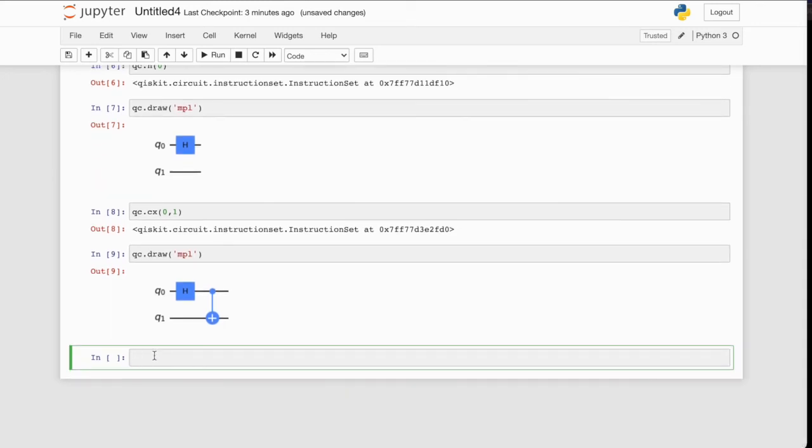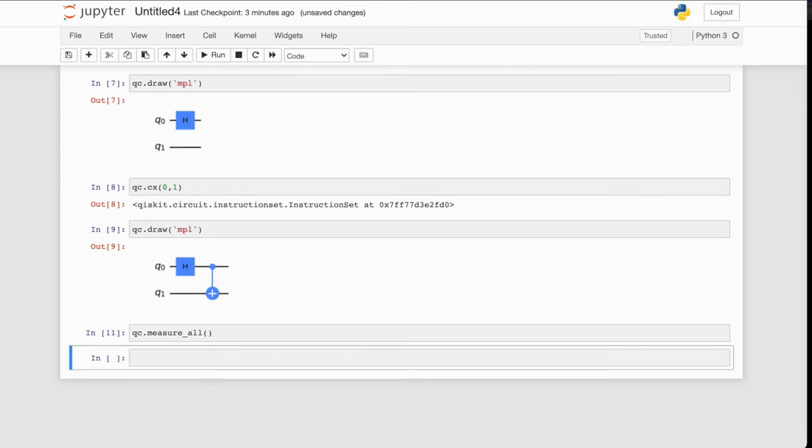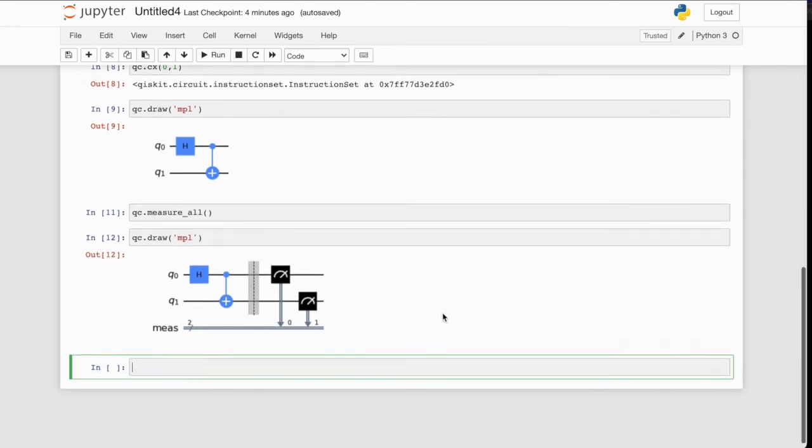Now all we need to do is measure the outputs of our qubits. And we can do that by calling measure_all. And that'll apply a measure gate to each of the qubits in the circuit. Oops, don't need that capital there. Let's run that again. It's one of the good things about the Jupyter notebooks. So let's draw our circuit again to see what it looks like. And you can see Qiskit's put a nice barrier there for readability. And it's added a measure gate on qubit 0 and qubit 1. And it's putting the results in two classical registers 0 and register 1. So that's our circuit complete.